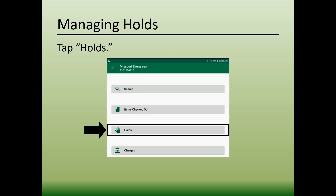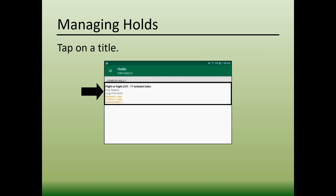Once you've placed a hold, it is possible that you may need to edit or cancel it. To do either of these, begin by tapping Holds on the home screen. Next, tap on the title that you want to manage.